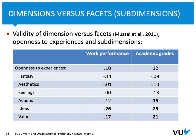A similar pattern was found for academic grades. Taking openness to experience and academic grades together gives a correlation of 0.12 — a low effect size. But if you take into account the ideas facet, you again see a medium effect size of 0.25. So fantasy, aesthetics, and feelings show negative correlations, while ideas shows medium effect size. This is really important — if you want to use personality to predict work performance, taking into account sub-dimensions would be very relevant. That's how we can improve predictions when considering facets.